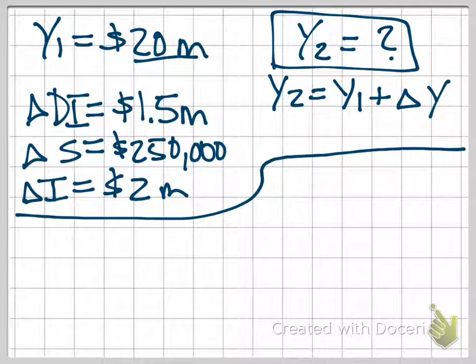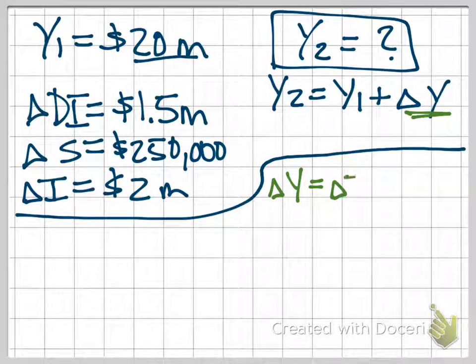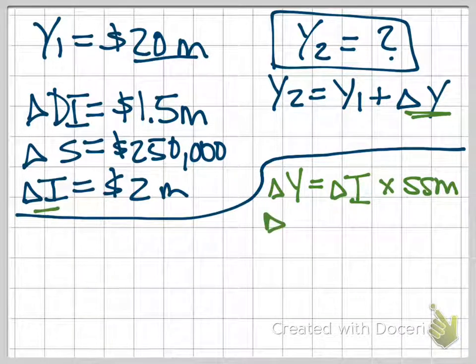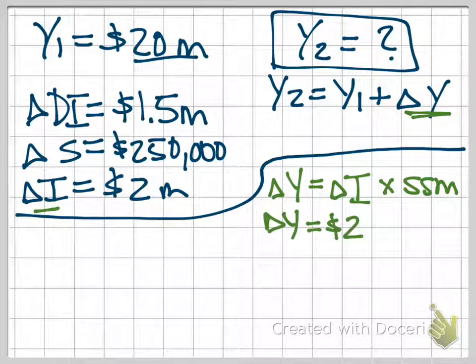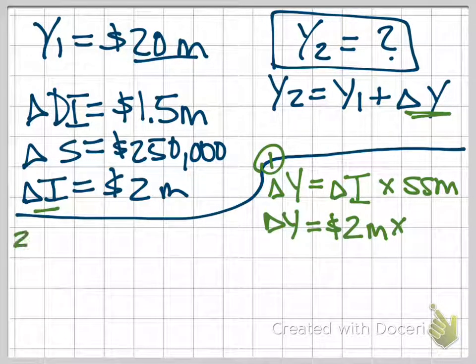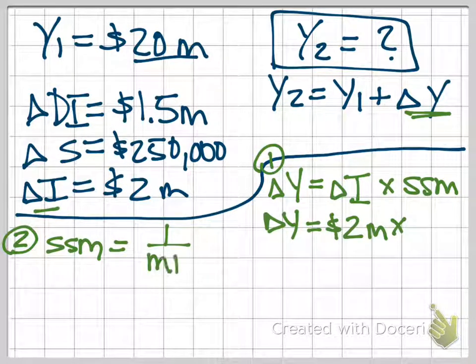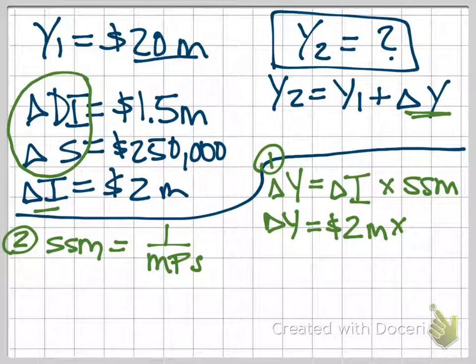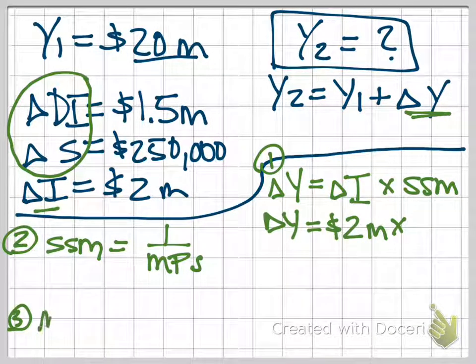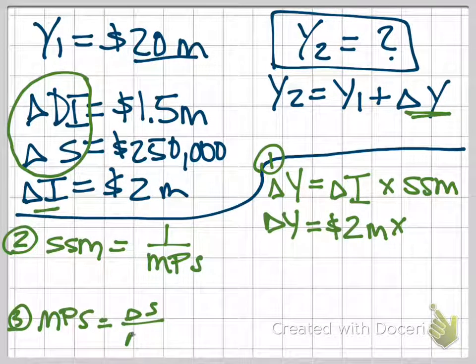Again, I recommend kind of working this in pieces. To get to delta Y, we're going to take some change in spending, in this case it's our investment spending, and multiply times the multiplier. Well, we know the change in investment spending is $2 million. Do we know yet our simple spending multiplier? No. So we're going to have to come back to this step later. Well, how do I find my multiplier? It's 1 over the MPS. Do I know the MPS? I do not. However, I know my change in disposable income and my change in savings, so I can use those to find the MPS. So the third piece down here, and then we'll work backwards, is that our MPS equals the change in savings over the change in disposable income. Let me grab us a new color. So I'm going to start at number 3, then go to 2, and then back to 1 so that I can get my answer.